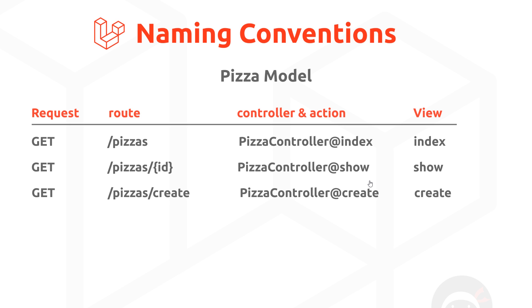The 'show' action is used to show a single item or a single record on a view. We might have the ID of a particular record, query the database for that, and show that single record to the user on a page. The view would also be called 'show'. The route for this would be forward slash, the resource — pizzas in our case — followed by some identifier or slug for that particular record, so we can grab the ID to query the database and inject it into the show view.